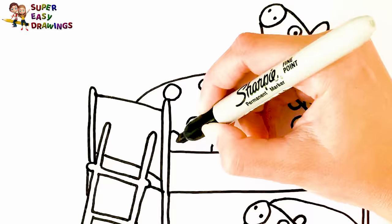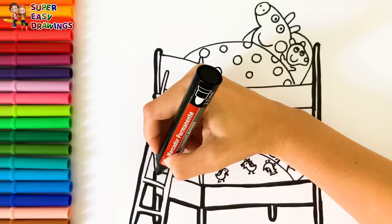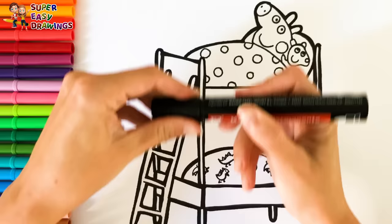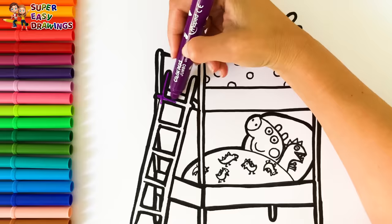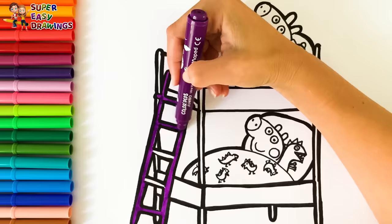Now I'm going to use this black marker to make this beautiful drawing more visible. Let's start coloring. I'm going to use this dark purple color for the staircase and also some parts of the bed.